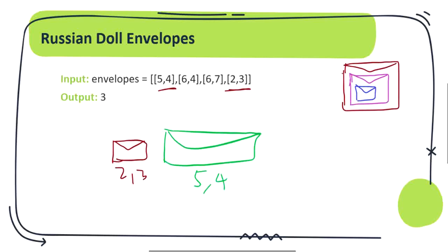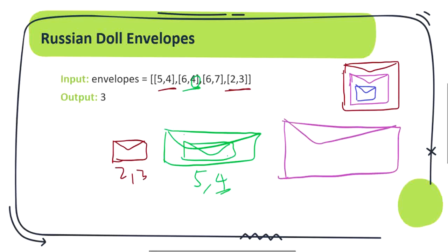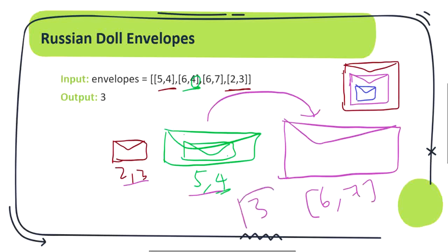We have to search for a bigger envelope than 5,4 to put this into. So as of now, 2,3 is inside 5,4. The next higher envelope is 6,4, but 6,4 shares the same height as 5,4, so you cannot put the doll into 6,4. Checking the next envelope, 6,7 — its height and width are both higher, so you can put both 2,3 and 5,4 inside 6,7. The total number of envelopes you can Russian doll is 3, and that's going to be our output.